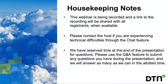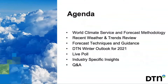Just a few housekeeping notes off the bat. This webinar is being recorded and the link will be shared afterwards — you should get that emailed to you. Please contact the host if you're experiencing any difficulties with the chat feature. We've got some time at the end for questions, but if anything's pressing, just type it into the chat and we'll try to get to those through the presentation. For the agenda today, we'll look at the World Climate Service forecast methodology, recent weather and trends from past winter and summer, our forecast techniques and guidance for the DTN Winter Outlook for 2021, a quick live poll, specific insights, and then Q&A.